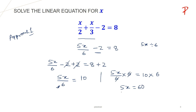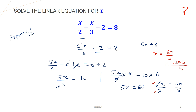Now our next job is to remove 5 from 5x. We have 5x is equal to 60. I have to divide both sides by 5, so that this 5 and this 5 cancel each other. And we have x is equal to 60 divided by 5. Now 60 can be written as 12 multiplied by 5, and the 5 in the numerator and the 5 in the denominator cancel each other, giving us x equals 12. This is the answer.